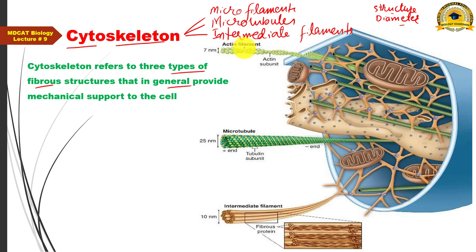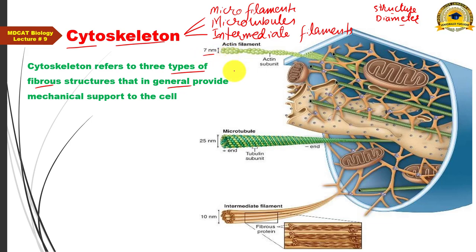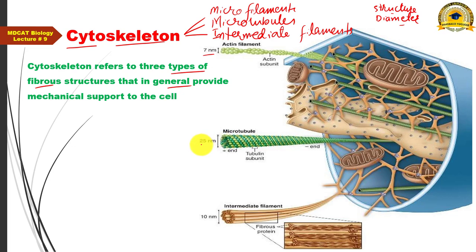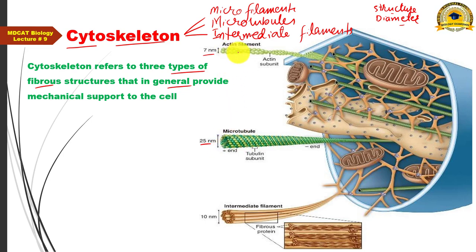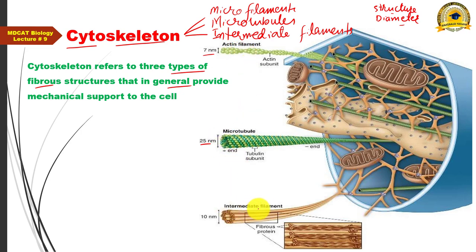Microfilaments, also commonly called actin filaments, have the smallest diameter — just 7 nanometers. In comparison, microtubules have the largest diameter — 25 nanometers — and are hollow tube-like structures. Microfilaments are solid fiber-like structures, while microtubules are tubular. The third type, intermediate filaments, have a diameter between these two.